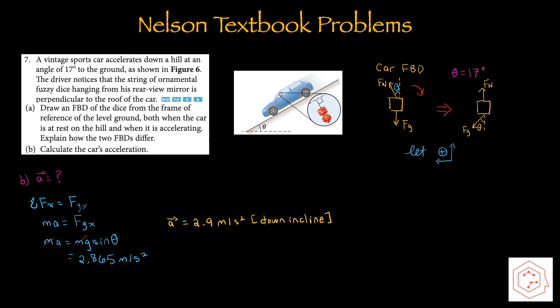To calculate the car's acceleration in part b, we use the car's free body diagram. Rotating the reference frame, the normal force acts upwards and gravitational force is diagonal. Letting upwards and forwards be positive, we work in the x component: F = ma, so ma = F_g sin θ. Cancelling mass, acceleration = g sin θ. Plugging in 17 degrees, acceleration is 2.9 m/s² down the incline.